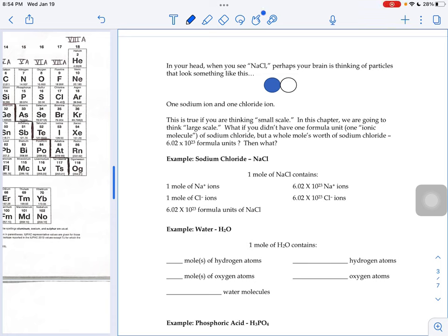If we had the chemical sodium chloride, you might be picturing in your head one ion of sodium attached to one ion of chloride. And that's true if you're thinking small scale, one formula unit, one ionic molecule. But we're going to think large scale. So rather than having one molecule, one formula unit, we're going to have a whole mole's worth of sodium chloride.